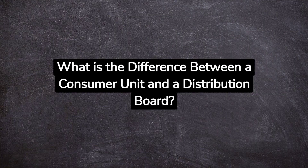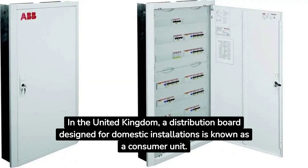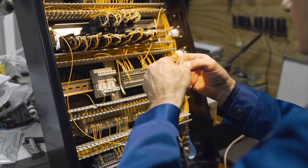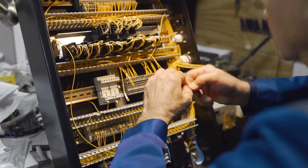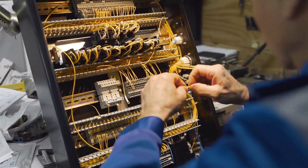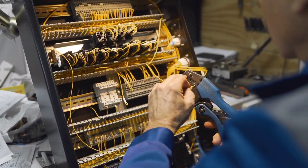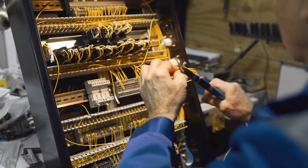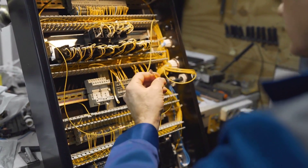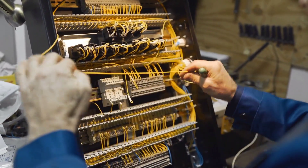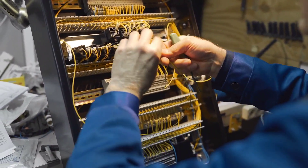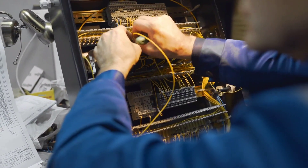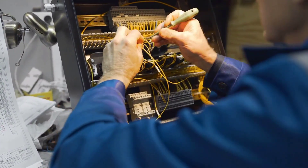What is the difference between a consumer unit and a distribution board? In the United Kingdom, a distribution board designed for domestic installations is known as a consumer unit. A consumer unit may also be known as a consumer control unit — a particular type of distribution board comprising a type-tested coordinated assembly for the control and distribution of electrical energy, principally in domestic premises, incorporating manual means of double-pole isolation on the incoming circuits and an assembly of one or more fuses, circuit breakers, residual current-operated devices, or signaling and other devices proven during the type test of the assembly as suitable for such use.